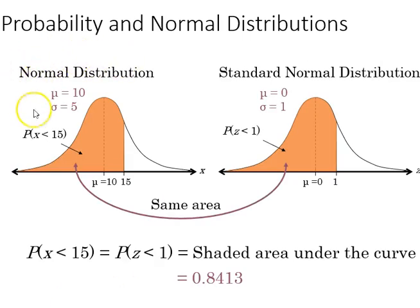If we compare a normal distribution with any set of values to the standard normal distribution, which always has a mean of zero and standard deviation of one, we can note that the area that's covered is the same. In this case, with our example, it'd be 0.8413.